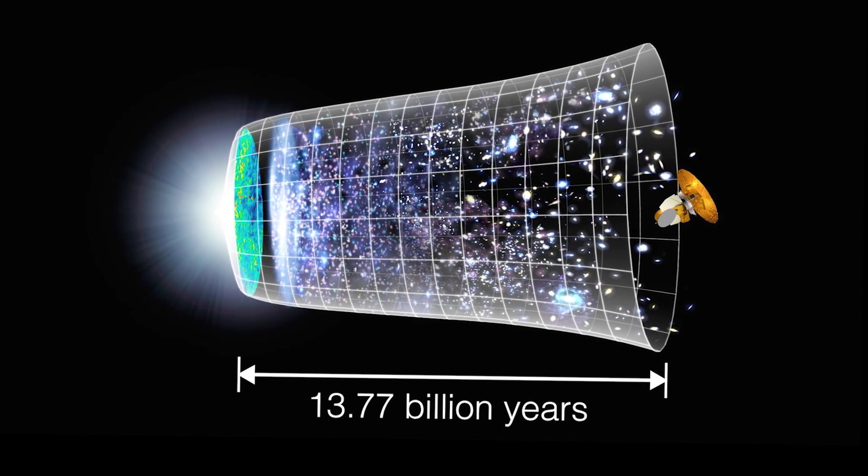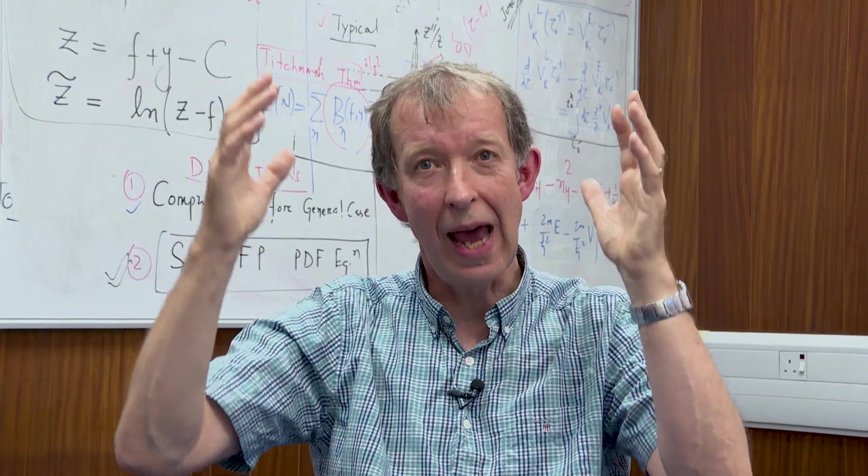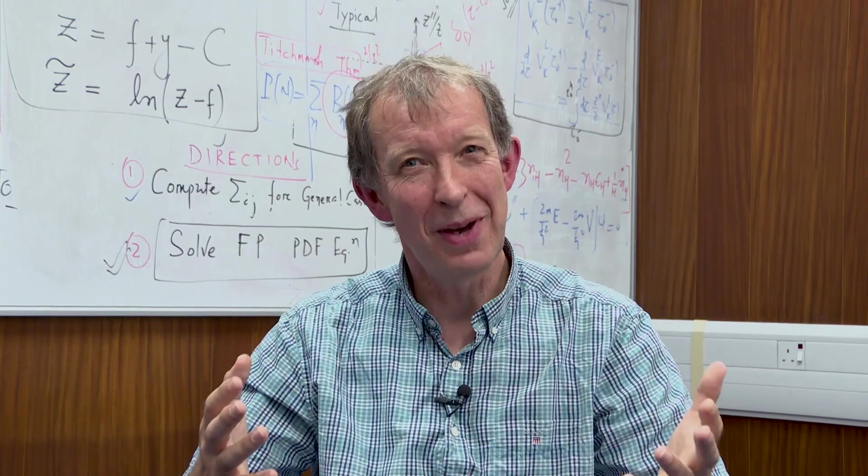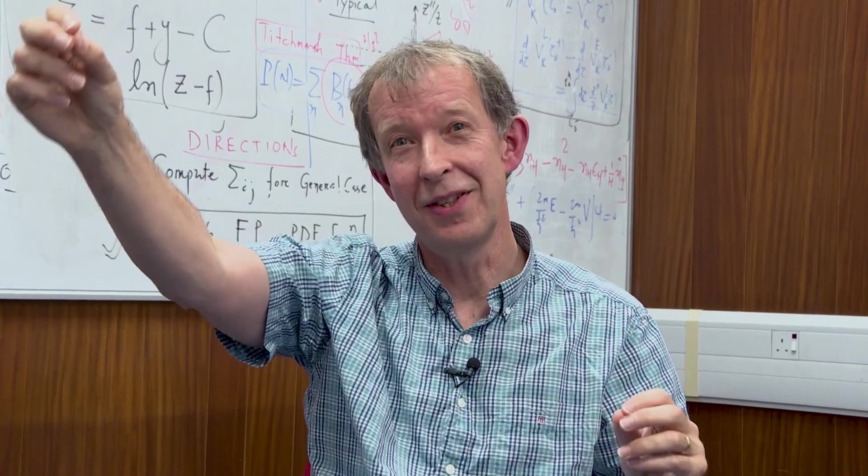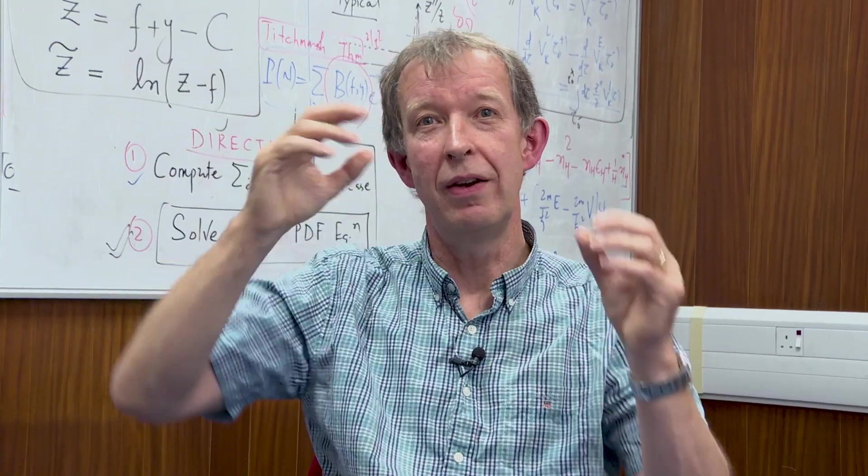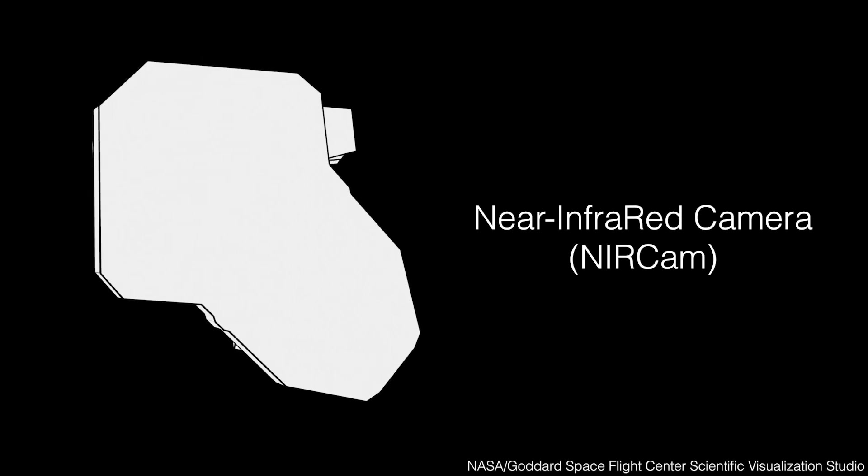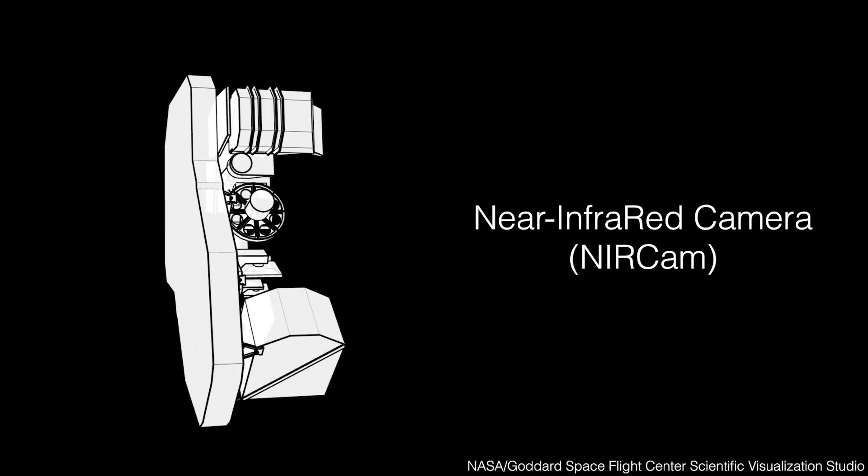So no matter how good your Hubble Space Telescope or any of your telescopes on Earth that can see visible light, it would not be able to see that light. Whereas JWST has specifically been made so that the light it picks up is infrared light.